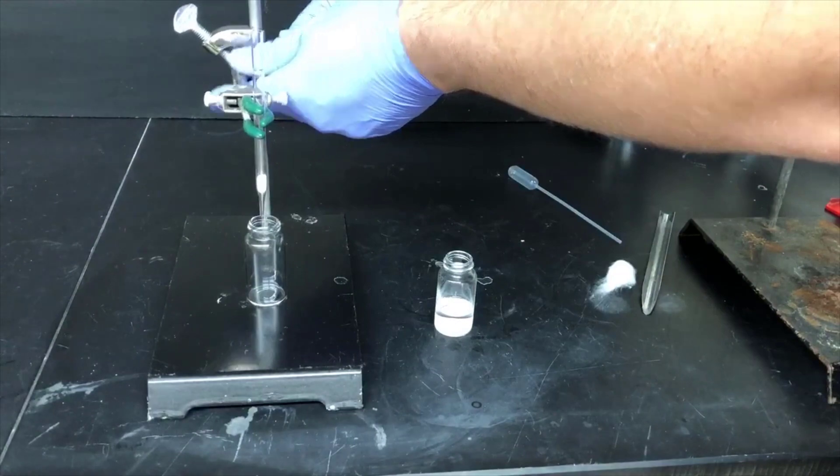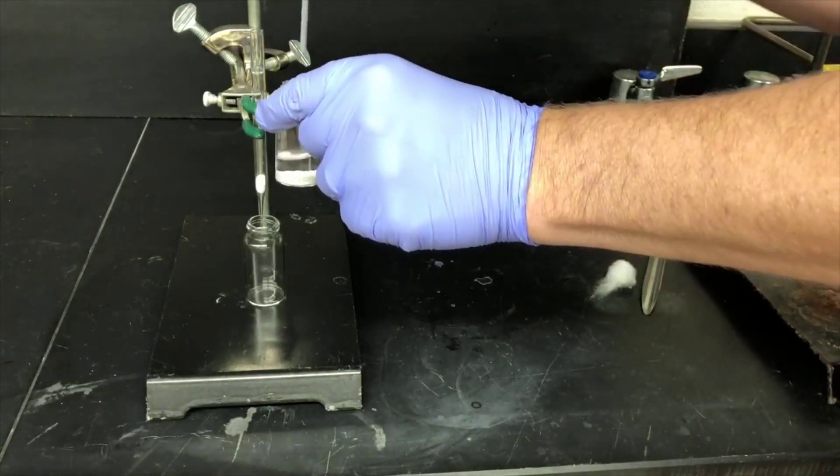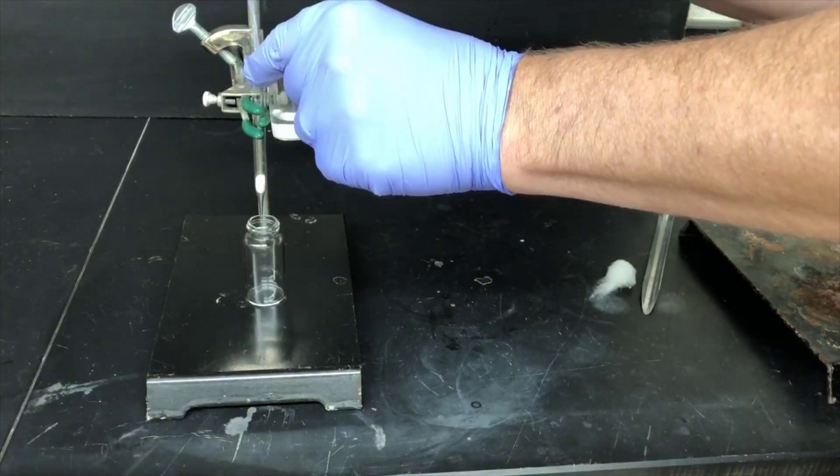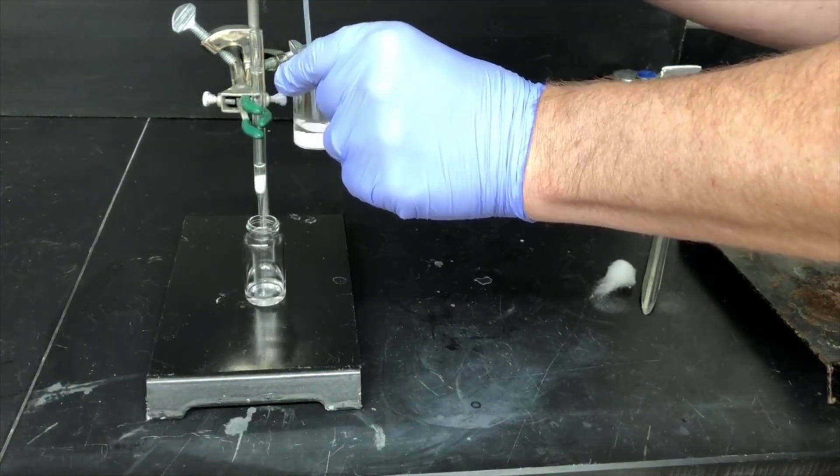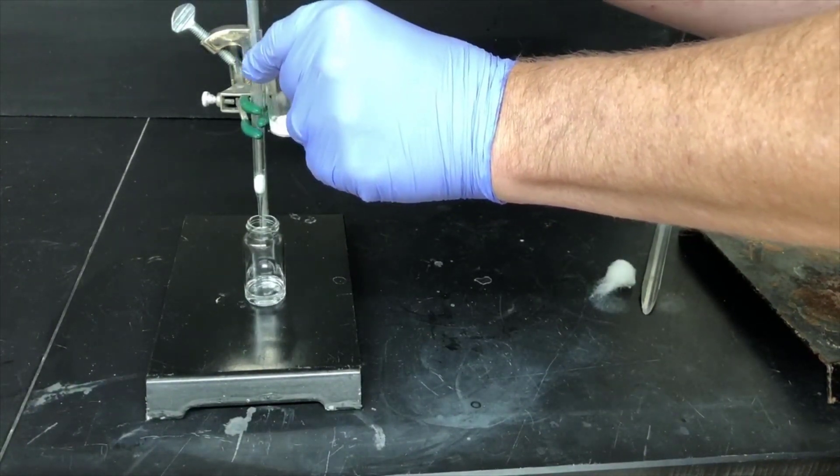Then I'll clamp this to a ring stand, and then I'll pipette the solution with magnesium sulfate through this pipette. The cotton will filter out any of the magnesium sulfate that makes it into the pipette, and the solution will come through clear.